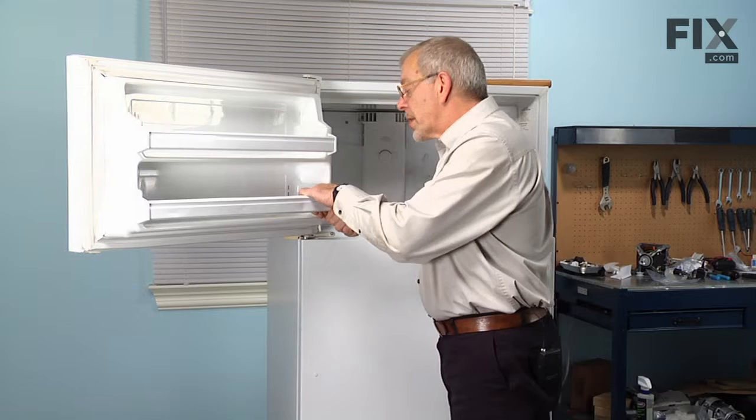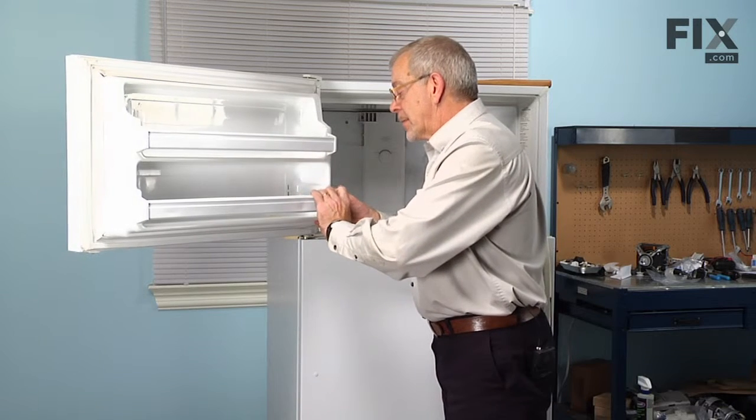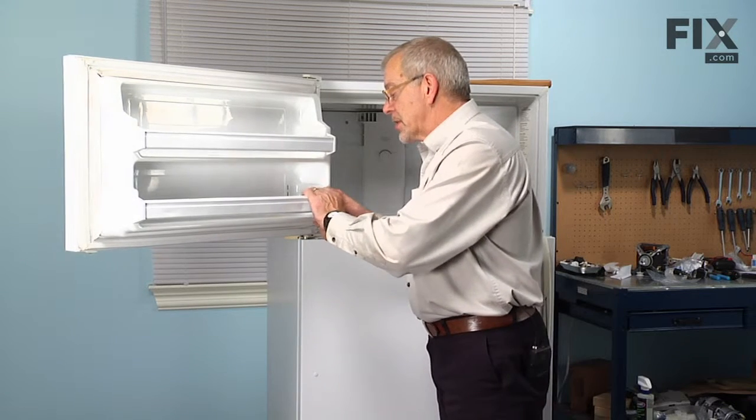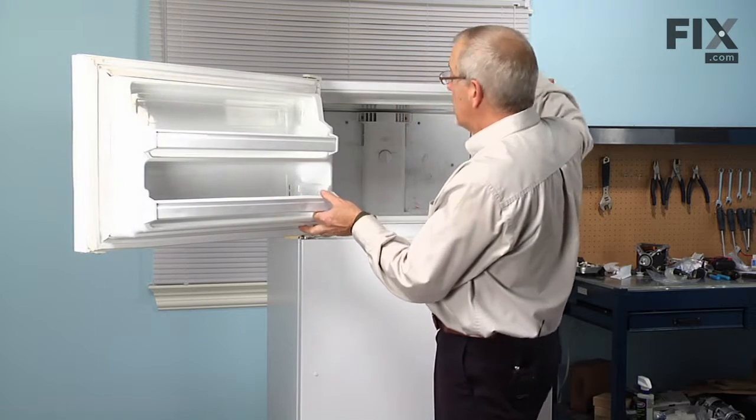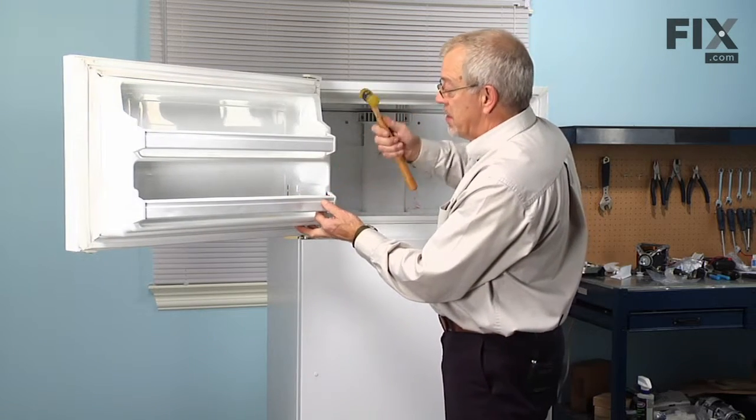The easiest way is to pull down on it enough to compress the bottom one and tilt it out on the top. If it's really snug, you can tap it down with a soft-faced hammer.